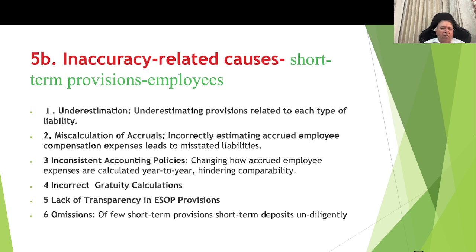Inaccuracy causes for short-term employee provisions: Number one — underestimating provisions related to each type of liability stated above. Number two — misclosure of accruals, incorrectly estimating accrued employee compensation expenses leading to misstated liabilities. Number three — inconsistent accounting policies, changing how accrued employee expenses are calculated year to year, reducing comparability. Number four — incorrect ESOP calculation, lack of transparency in ESOP provisions. Number five — omission of a few short-term provisions, done undiligently.